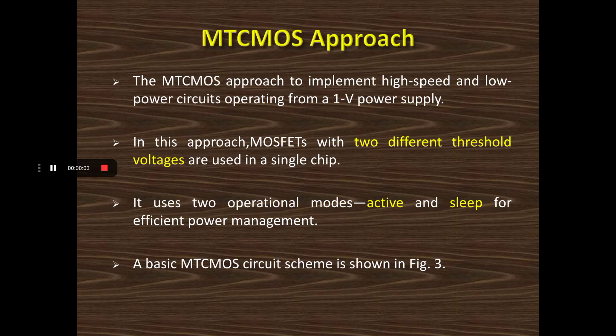Welcome to GMK tutorials. In this video we are discussing the MTCMOS approach. In the previous video we discussed VTCMOS, which is variable threshold CMOS. MTCMOS stands for multiple threshold CMOS. The major drawback of VTCMOS is that we have to maintain another circuit that takes additional area on the chip, and we are altering the circuit operation by changing biasing voltages in the PMOS and NMOS transistors.